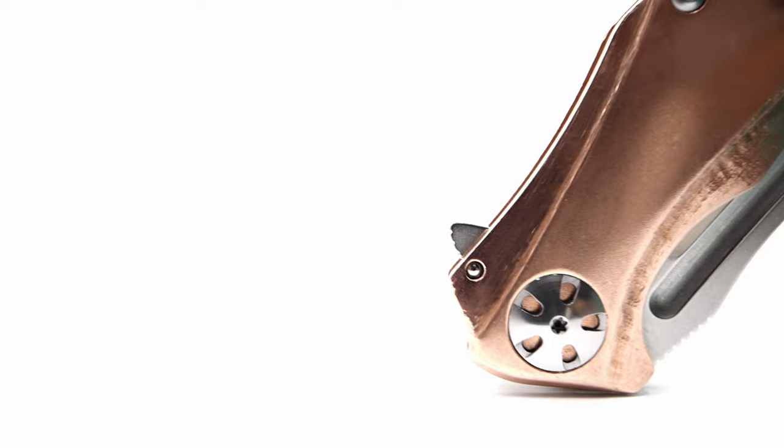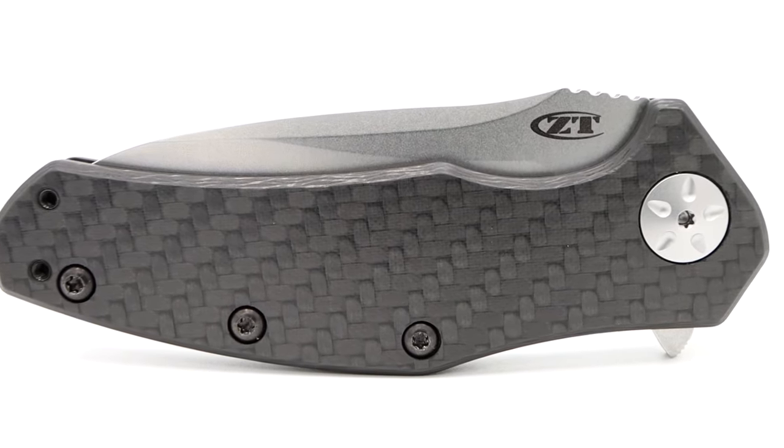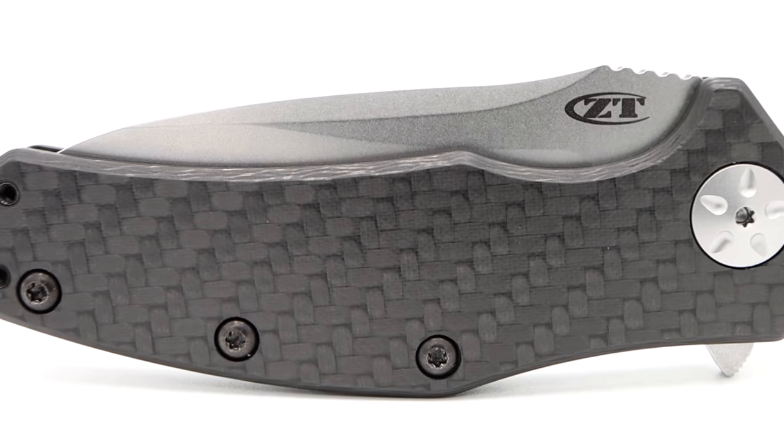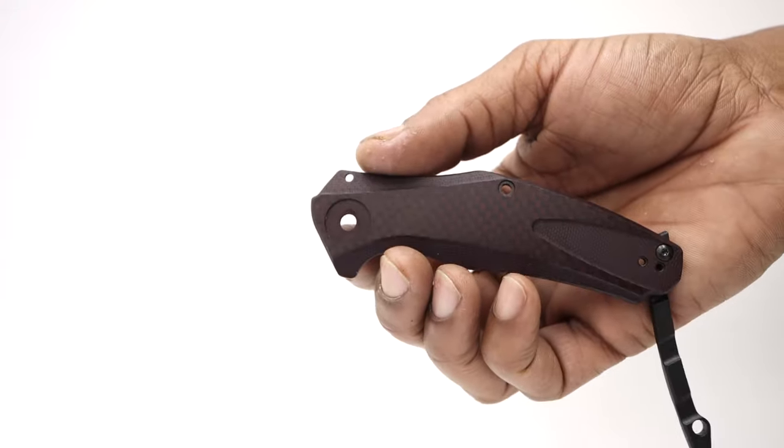A couple of reasons why the ZT-0770 is so good and also areas it beats the Natrix in are its amazingly thin and light solid carbon fiber scales, with the Natrix sporting a carbon fiber laminate atop of a G10 scale.